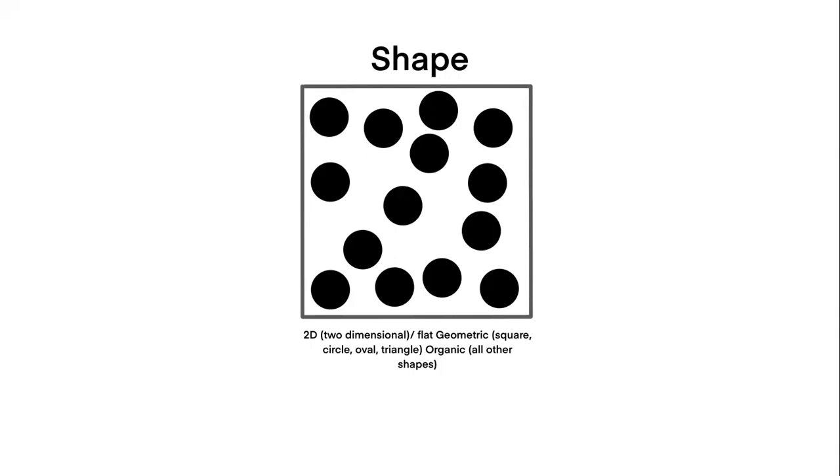Next up is form. Form is a three-dimensional figure. This is something that would actually take up space in the real world. It can also be geometric like a cube or a sphere as we see here, or it can be organic like people, furniture, animals, things like that.